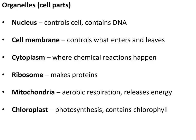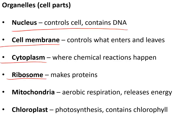The organelles are the parts of a cell. The nucleus controls the cell and contains DNA. The cell membrane controls what enters and leaves the cell. Cytoplasm is where chemical reactions happen in the cell. Ribosomes make proteins. Mitochondria are where aerobic respiration happens to release energy. Chloroplasts are where photosynthesis happens.